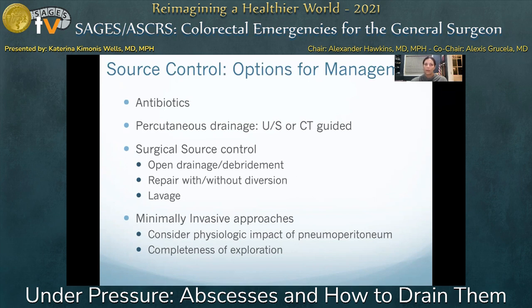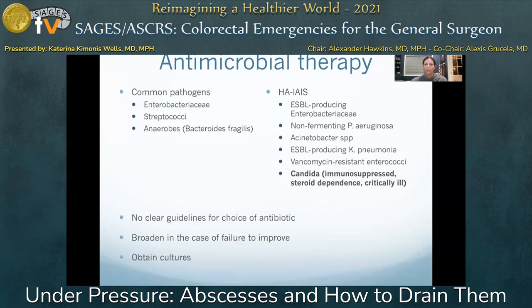There are no clear guidelines for the choice of antibiotic agents, but empirical antibiotics should be chosen to cover the most common pathogens present in intraabdominal organs, including Enterobacter, Streptococcus, and anaerobic bacteria, most common of which is Bacteroides.